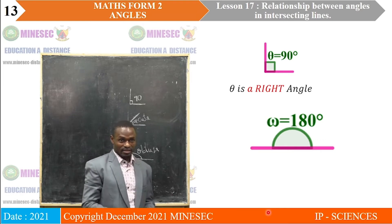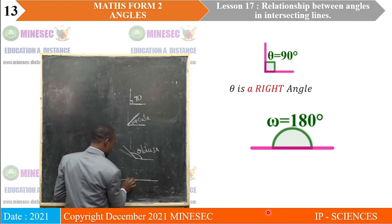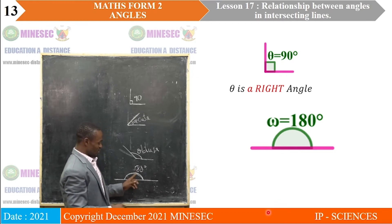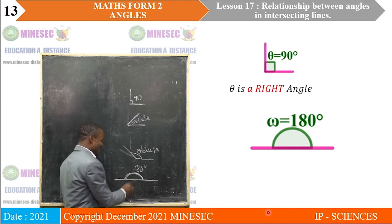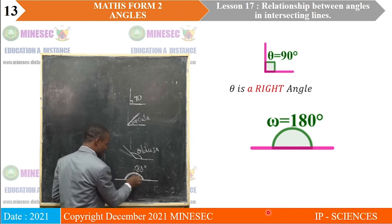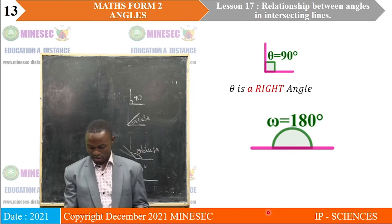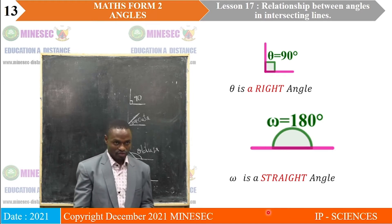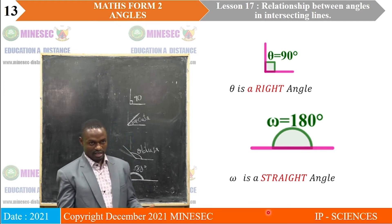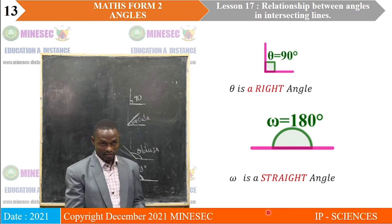Lastly, the angle omega. Looking at the measure of that angle omega, which is an angle on a straight line, the measure is 180 degrees. When an angle measures 180 degrees and that angle is on the whole side of a straight line, that angle is called a straight angle. All straight lines, as we already know, will always give a measure of 180 degrees. So that angle omega is a straight angle.